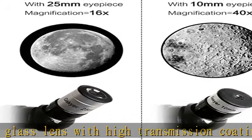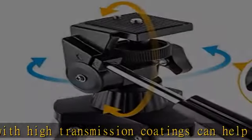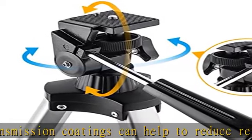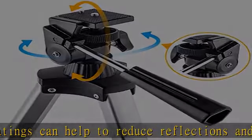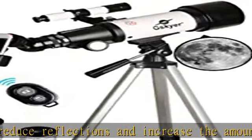making it easier to observe objects at different distances. Wireless remote, the 5x24 finder scope with mounting bracket and cross hair lines can help to locate objects easily,